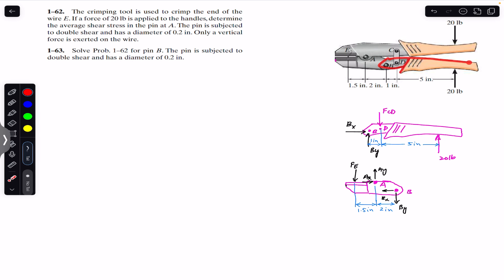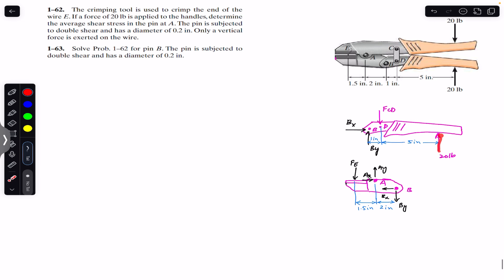This is our free body diagram. You can see that if we have a 20-pound force here, we will have the force of that CD link. CD is a two-force member. What will happen is that these two 20-pound forces are going to compress this CD member. If it compresses this CD member, it will apply force on point D in the downward direction.